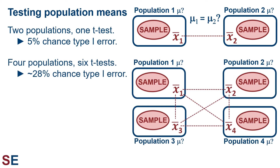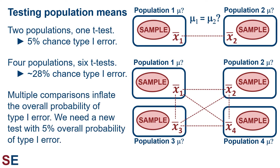When we have more than two populations — four, for example — we would have to do six different t-tests, one for each pair. These would also usually give us the correct answer, but now the overall chance of at least one type 1 error rises to about 28%. This is a more serious problem and we face a genuine risk of making the wrong conclusion. Multiple separate comparisons inflate the overall probability of type 1 error.